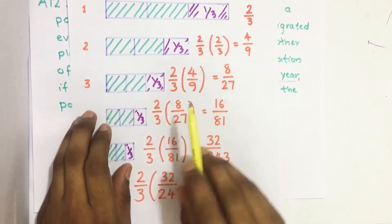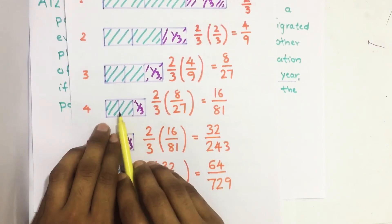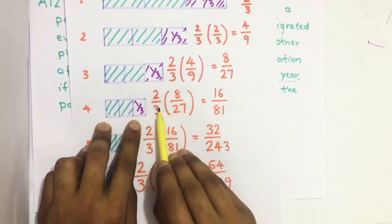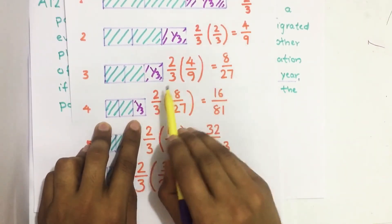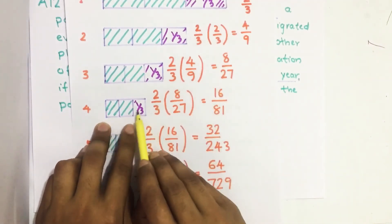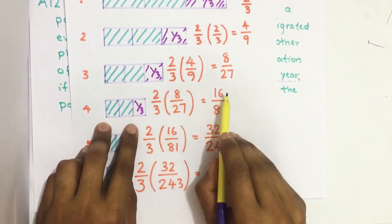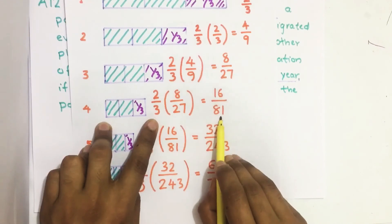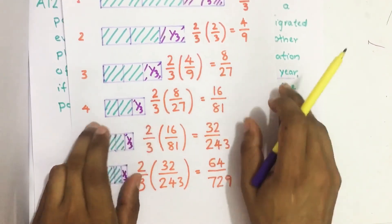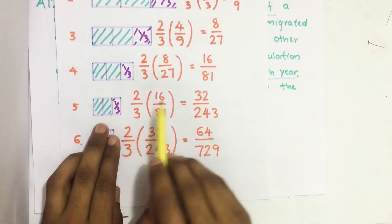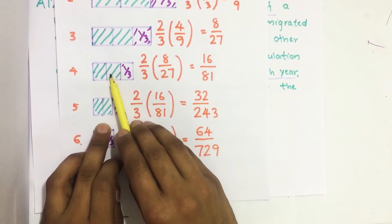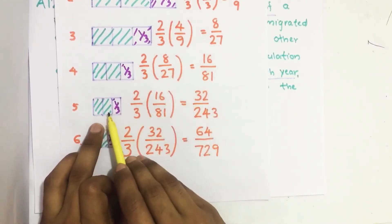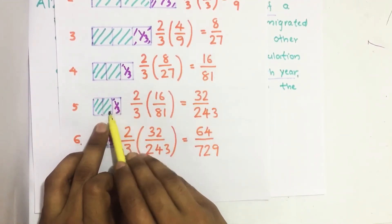At the end of the fourth year, two thirds of the leftover population — because one third left — gives us two thirds of eight by twenty-seven, which is sixteen by eighty-one. Again, from this leftover population, one third leaves, and two thirds of sixteen by eighty-one gives us thirty-two by two forty-three.